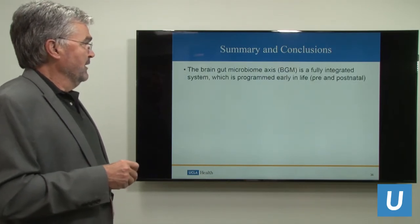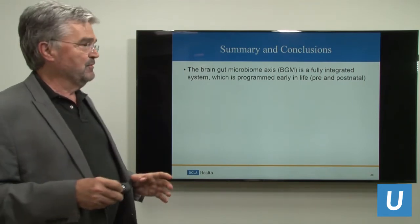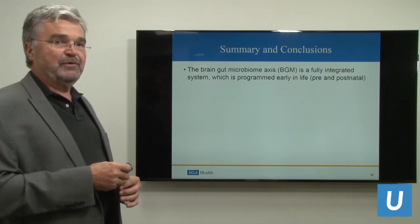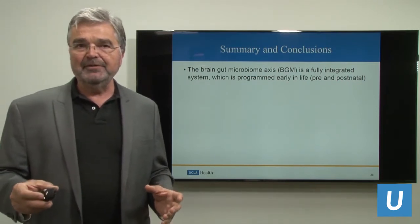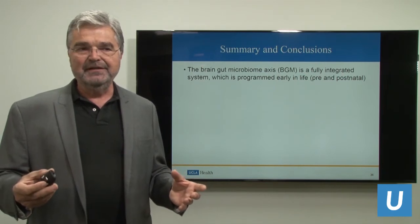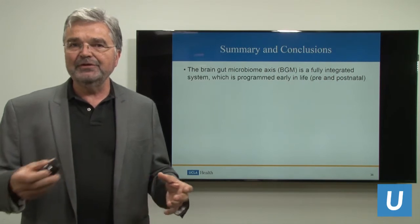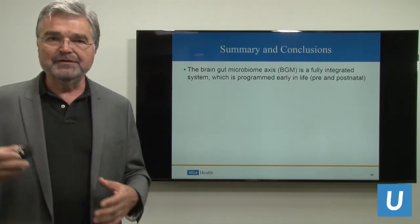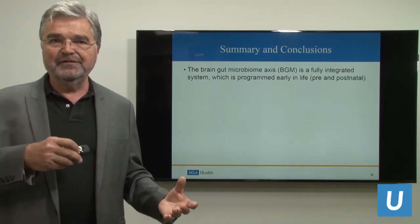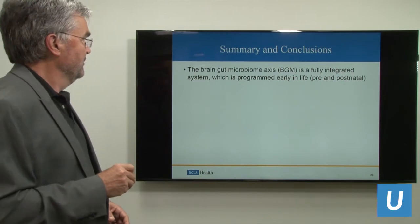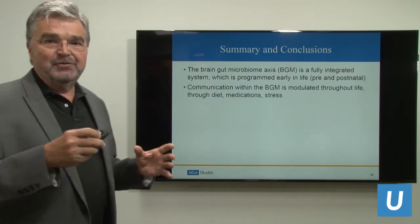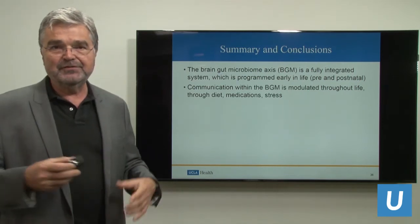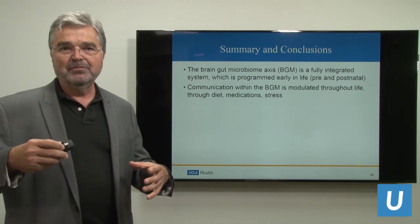In conclusion, hopefully I was able to convince you of a few fundamental facts. The brain-gut microbiome axis is a fully integrated system which is programmed early in life — the operating system is established early on. You could say that the orchestra players are hired early on in life in the first three years, but then the orchestra throughout life can play different tunes and different symphonies, depending on what you feed them. Despite the early programming, the communication within this brain-gut microbiome axis is modulated throughout life through diet, medication, and stress — which gives us three targets for possible interventions.